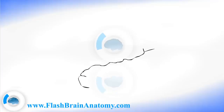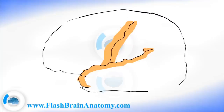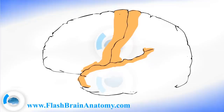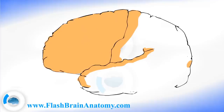I will start with the lateral sulcus — I am illustrating right now the posterior ramus of the lateral sulcus. Then there is the central sulcus, with the precentral gyrus and the postcentral gyrus. This gyrus over here is the precentral gyrus, and this is the postcentral gyrus. The lobe over here is the frontal lobe of the brain.